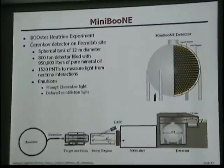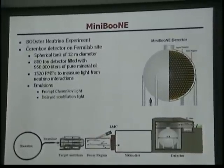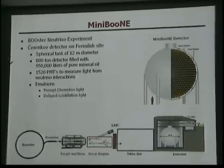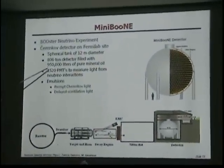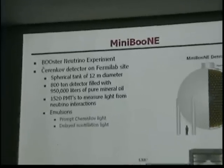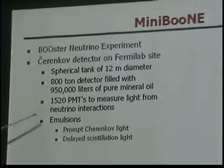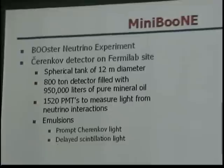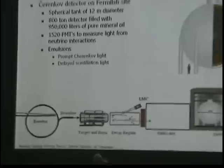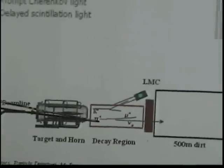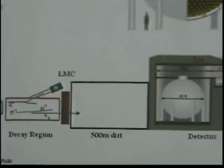We also have our own neutrino detector a little bit smaller, right here down the street — it's MiniBooNE, a boosted neutrino experiment and also a Cherenkov detector. It uses these photomultiplier tubes. It's a spherical tank, 12 meters, an 800-ton detector with about a million liters of pure mineral oil, and they measure the light from neutrino interactions. Neutrinos are created using a booster beam line of protons — they hit a target, the pions decay, and we capture the neutrinos.